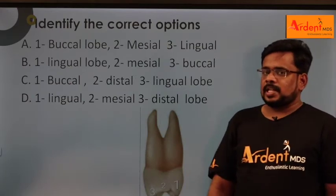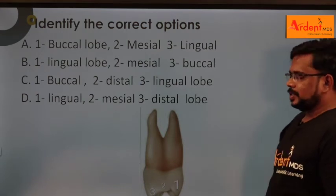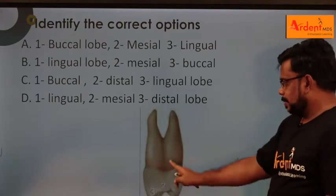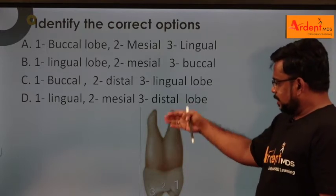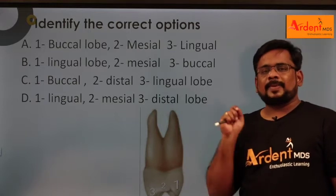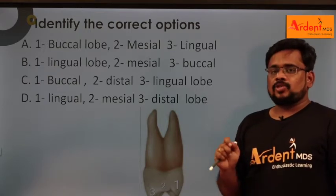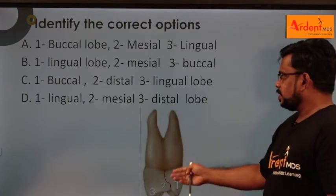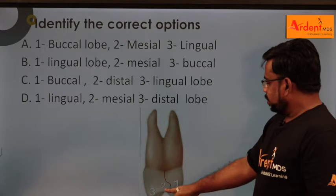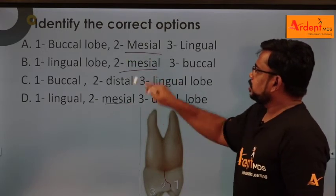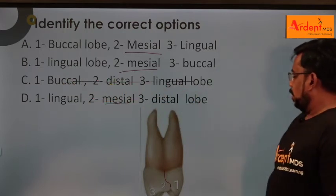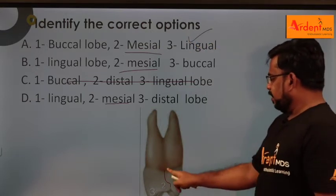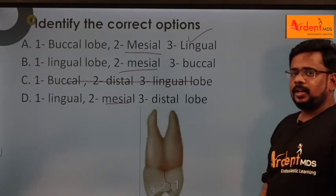One more question from tooth morphology - which premolar has two roots? Maxillary first premolar alone has two roots, so it is the maxillary first premolar. Now we need to tell whether it is the mesial or distal side. The mesial side has a very special feature called the mesial marginal developmental groove. That groove is present on the mesial side, so this is the mesial side. The buccal cusp is number one, and the lingual is number three, so you can go for the third option by identifying the special feature.